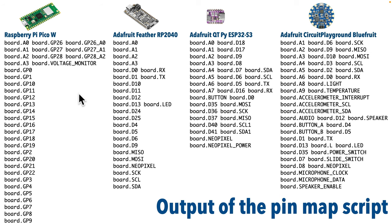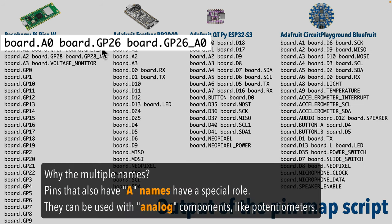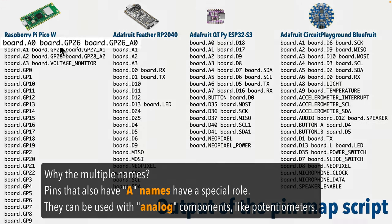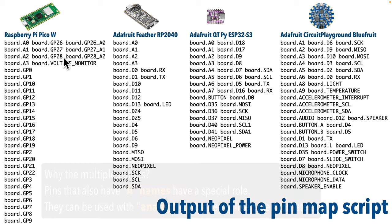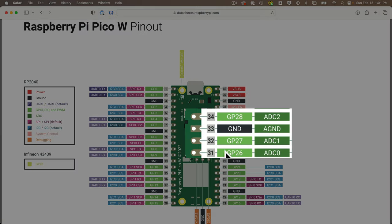We see that certain lines have multiple pin names on them. For example, on the Pico W, we see that board.A0 is followed by board.GP26, and even board.GP_A0. You can use any of these names to refer to pin GP26. In fact, A0 through A2 are also referred to as GP26 through GP28. If we search online for the pinout diagram for the Raspberry Pi Pico W, we see that we're referring to these pins here.